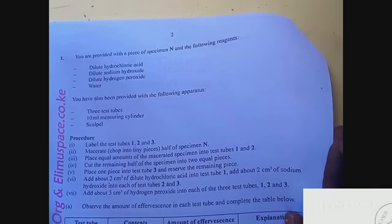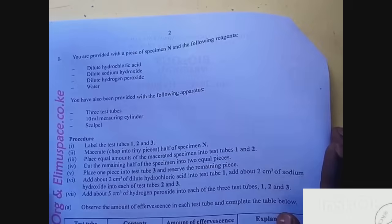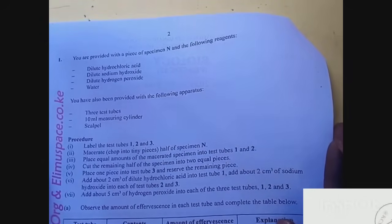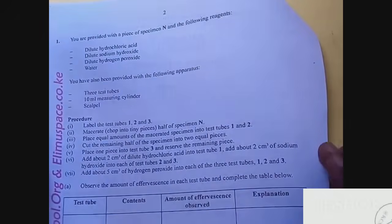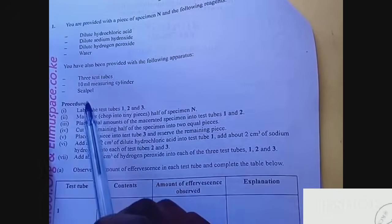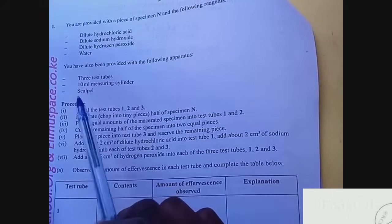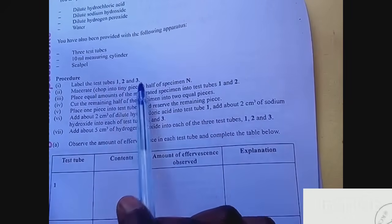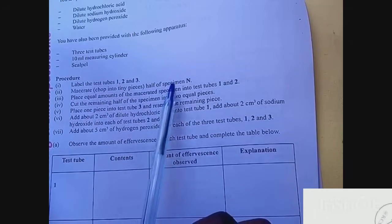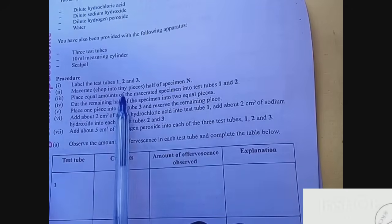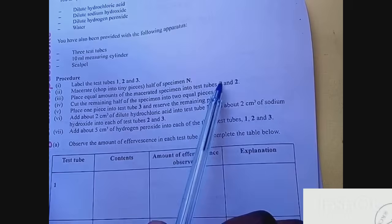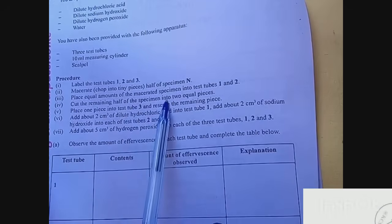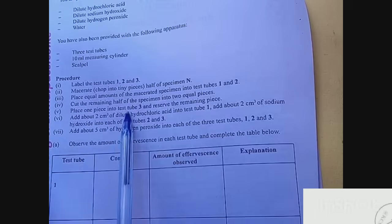As you can see, question one says you are provided with a piece of specimen N and the following reagents. Specimen N was a potato. You have been provided with three test tubes, 10 milliliter measuring cylinder, and a scalpel. Let's see the procedure: label the test tubes one, two, three. Macerate or chop into tiny pieces half of specimen N. Place equal amounts of macerated specimen into test tubes one and two.